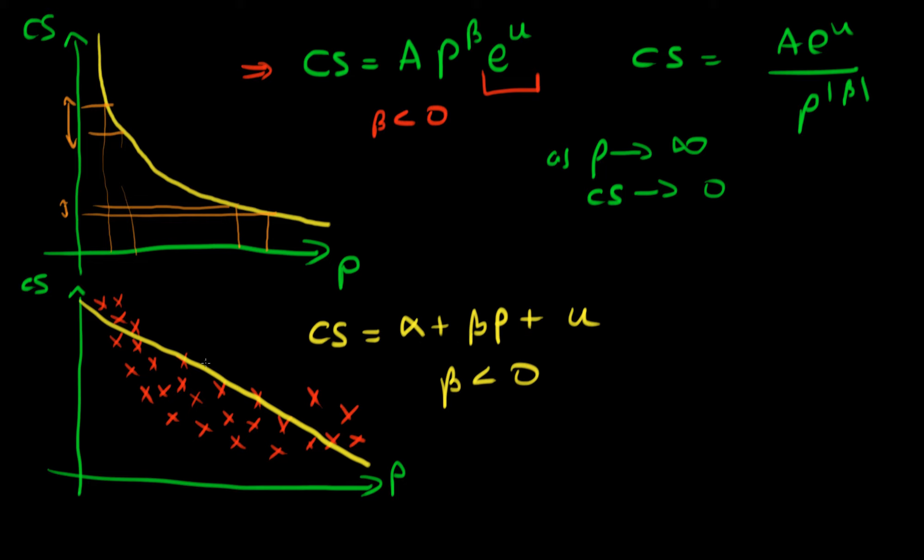But notice that β from our estimated straight line is just the gradient and it's going to be constant, completely independent of the price. So when the price of a car is really low perhaps β underestimates the effect of small changes in price on car sales, whereas when price is quite high perhaps β overestimates the effect of car sales on prices.